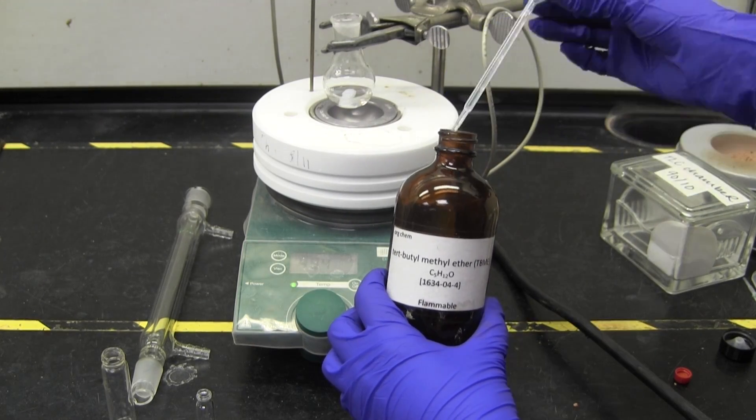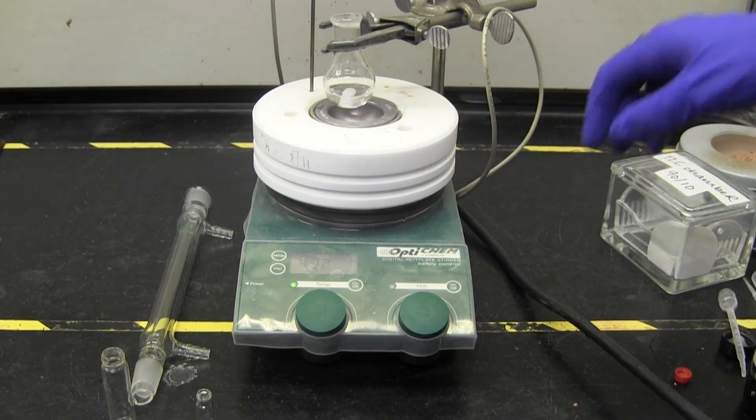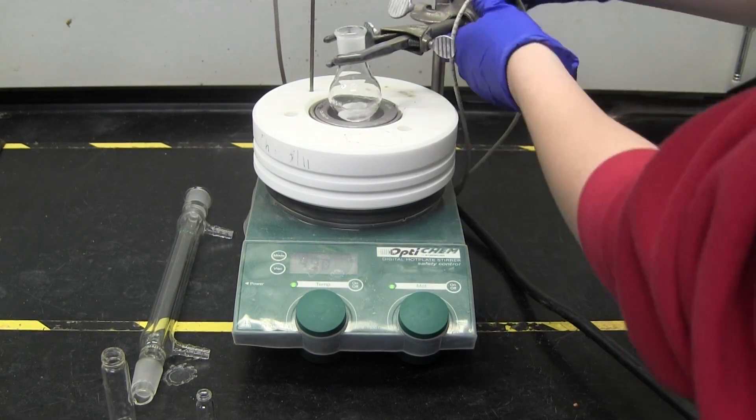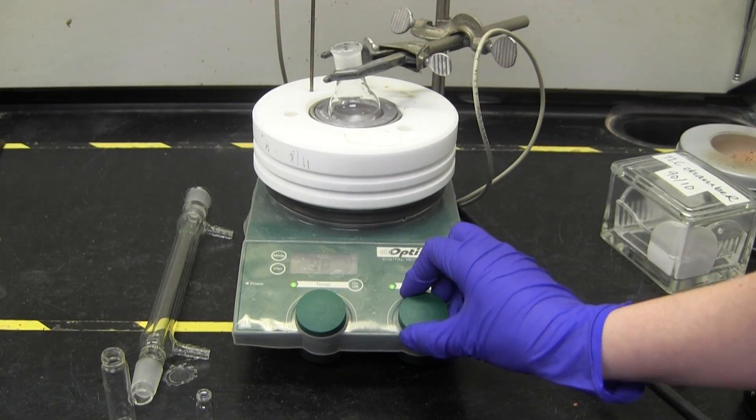Place the round bottom flask in a thermo well and attach an air condenser. Heat the reaction to 55 degrees Celsius and stir vigorously for 2 to 4 hours.